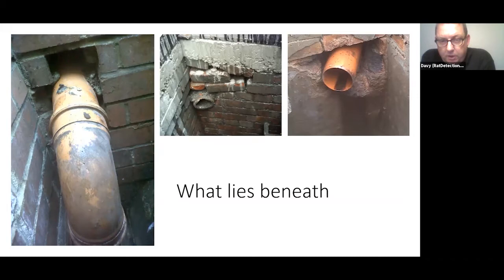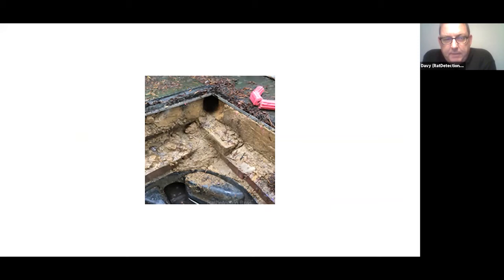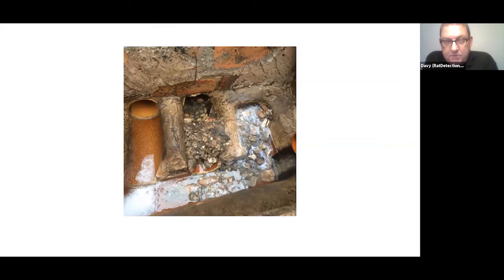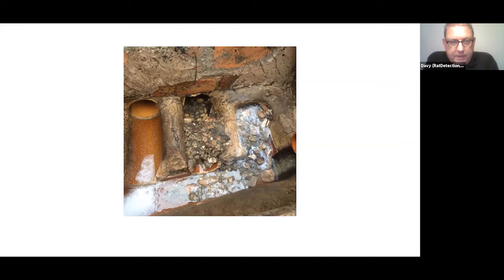We encourage pest controllers to think drainage and, if they safely can, to lift inspection covers on site - you'll be amazed what you find beneath. This also opens up proofing opportunities you can monetise. Here we have an example of poor sand-and-cement mix where rats have gnawed straight out of the side of a chamber. In another example you can see stone, silt, and debris protruding from a branch line, suggesting rats are tunnelling out - it could be redundant or collapsed and needs further investigation.